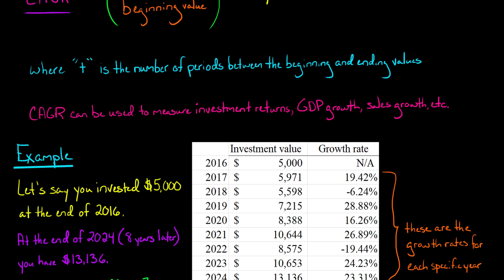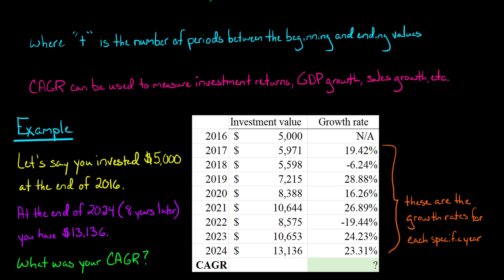So let's do an example. I've got some numbers I made up here. Let's assume that you invested $5,000 at the end of 2016. So there's no growth that happens in 2016 because you invest at the end of the year in this example. But then in 2017, your investment grows by 19.42%. So then it has a value of $5,971 at the end of 2017. And then it declines by 6.24% in 2018, etc.